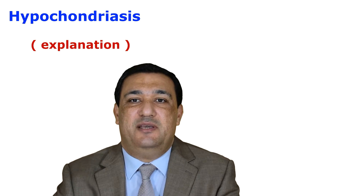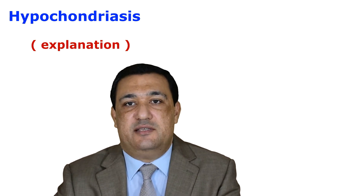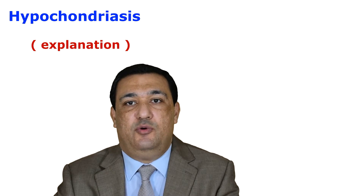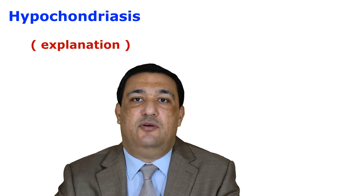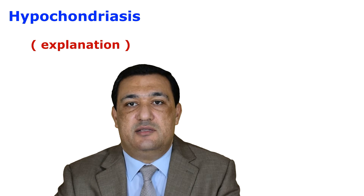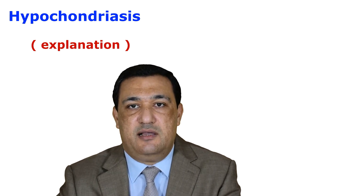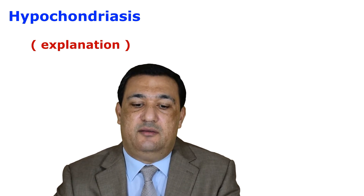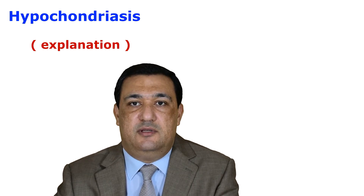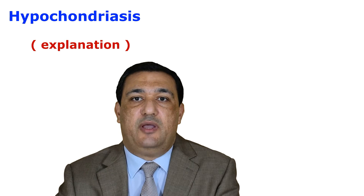This station is about hypochondriasis explanation. In this station, you need to first explain to the wife or sister of the patient what is meant by hypochondriasis — simply, it is a health-related anxiety. You need to highlight the etiology of this disorder and then explain the lines of treatment.